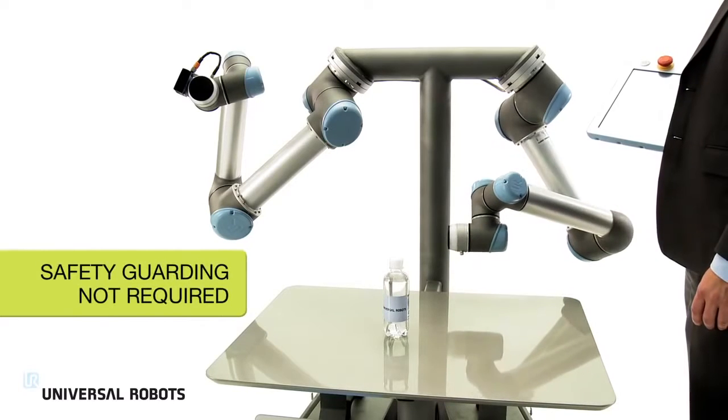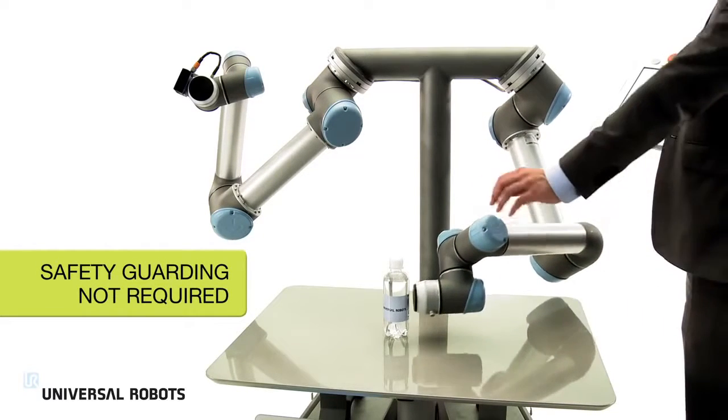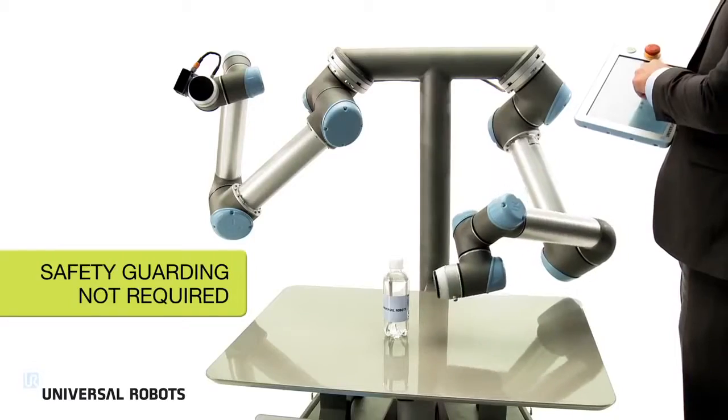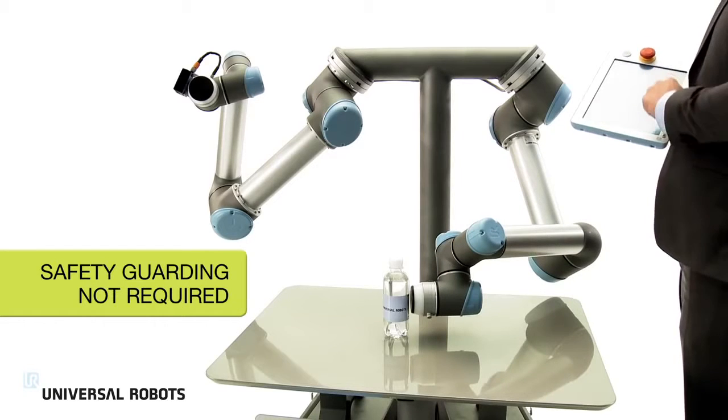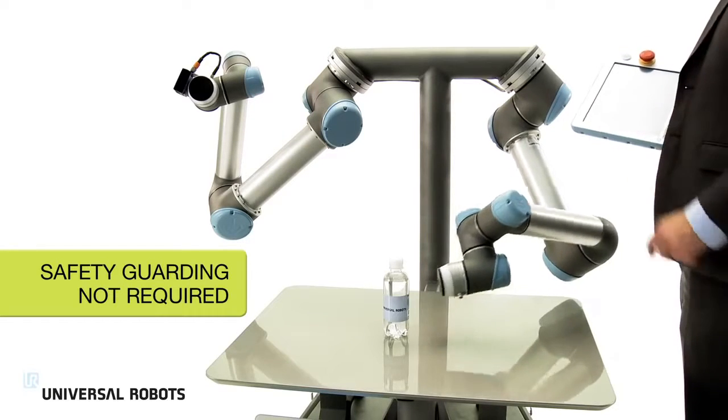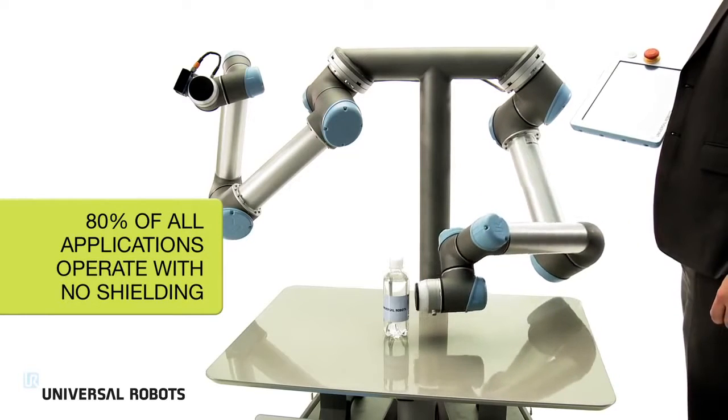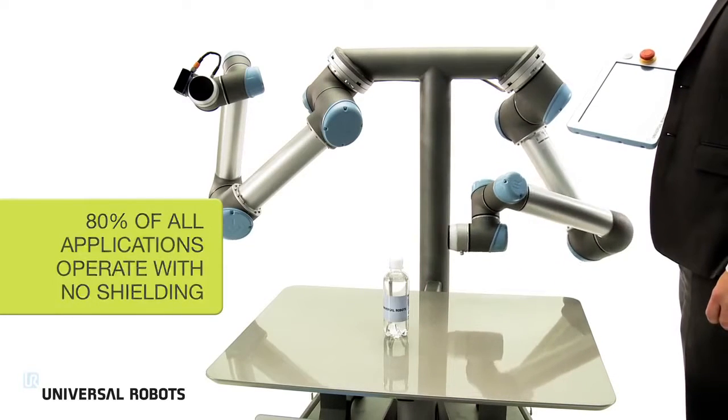Employees can work right alongside the robot. If a person comes into contact with the robot arm, it automatically stops operating, ensuring worker safety. This enables you to integrate the robot right into your production, with no need for safety guarding. 80% of current Universal Robots applications operate with no shielding.